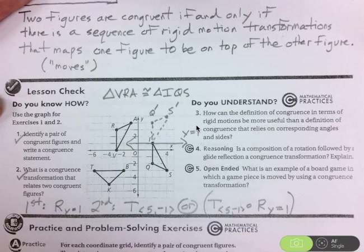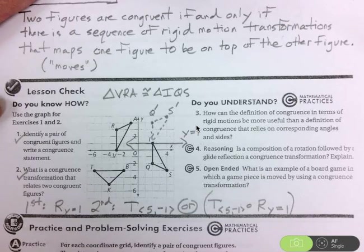So I didn't have to use SSS or SAS or ASA or any of the other postulates that we have for proving congruent triangles. I can do it by using transformations.